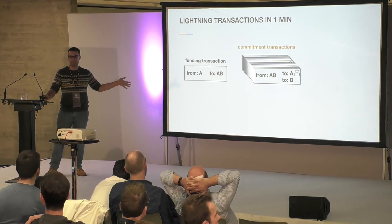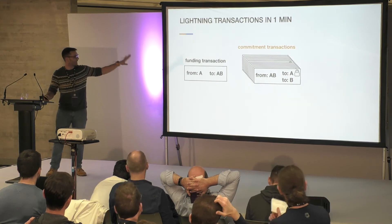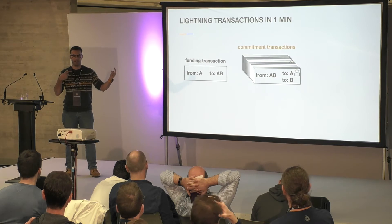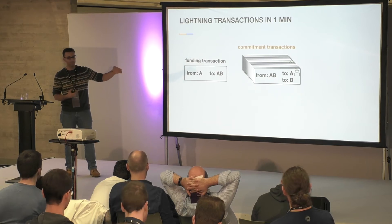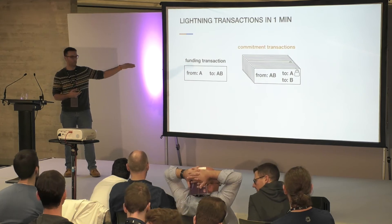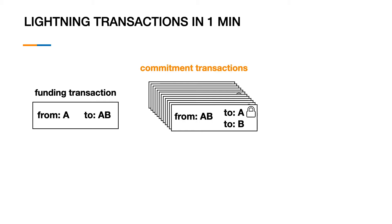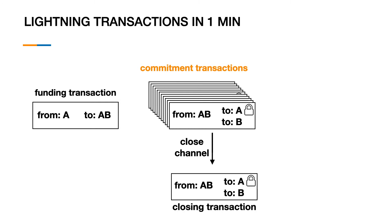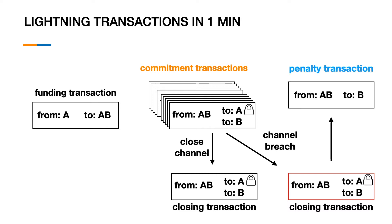We have a funding transaction. Let's say we are Alice and we are funding a channel with Bob. We have one transaction that goes from Alice to a multisig from Alice and Bob. Then we're going to have different commitment transactions, which basically represent the exchange of money from one side to the other. Every single time we perform a payment there's going to be a new commitment transaction. These build up, and the idea is that we should only use the last iteration of the commitment transaction — otherwise we will have a channel breach. At some point we will close the channel, either cooperatively or non-cooperatively. If at some point we decide to use an old state to close the channel, then we'll have a channel breach, and as a consequence the other party will create a penalty transaction and take all the money from us. So the two names highlighted here are commitment transaction and penalty transaction — those are the ones we're going to care about.